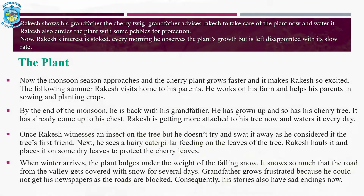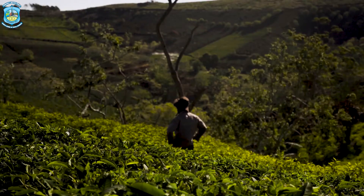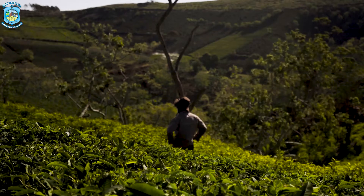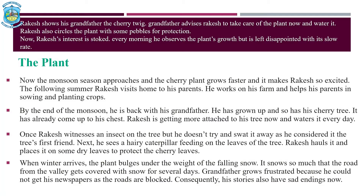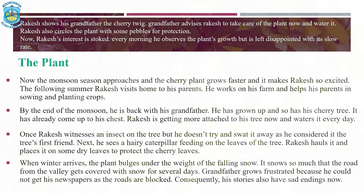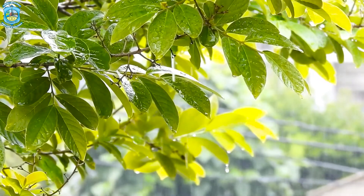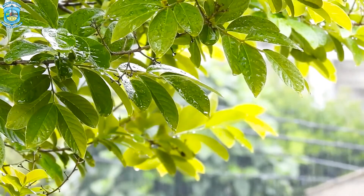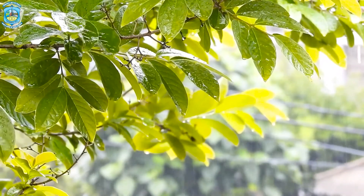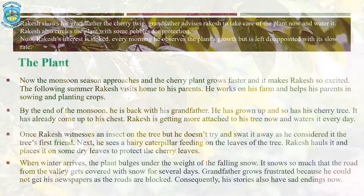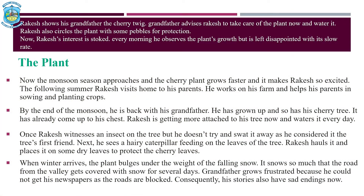Rakesh's interest is now stoked. He observes the plant every morning and sees it grow, but is disappointed that it grows too slowly. The monsoon season shoots up the tree's growth rate, which truly excites Rakesh a lot. He then goes back to his parents, works on a farm, and helps his parents in sowing and planting crops, forgetting that he has actually planted a cherry tree somewhere.